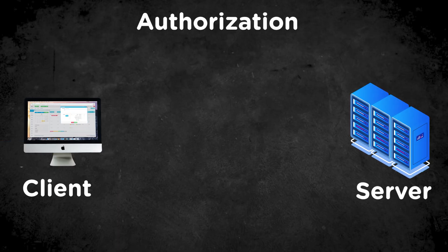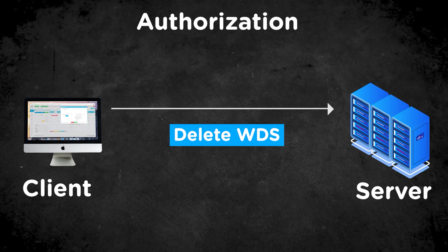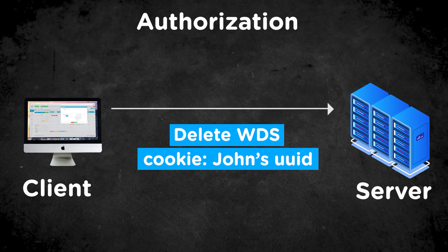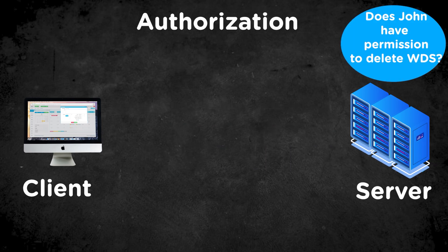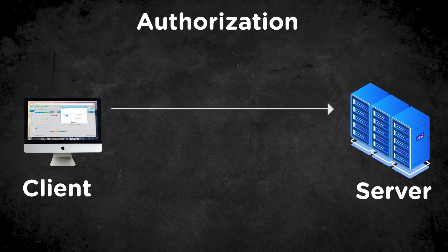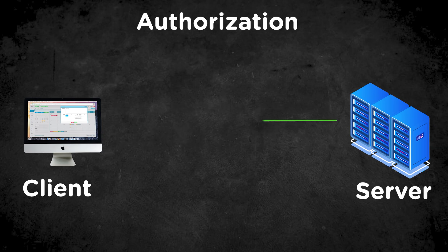Now for authorization — the client is again going to make a request to the server. Let's say you click on a button that would allow you to delete my YouTube channel. I have permission to do that, but nobody else does. So it's going to send up that cookie with the ID saying 'I am John,' and the server checks: does John have permission to delete the Web Dev Simplified YouTube channel? Obviously, hopefully, John does not. So it sends back an error that John does not have the ability to do this. Or, if you're querying a list of information, it's only going to return the items you're allowed to access — like a teacher only seeing the students in their own classroom, not all students in the entire school.